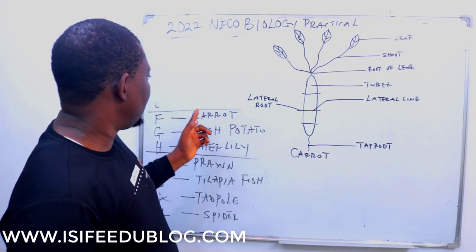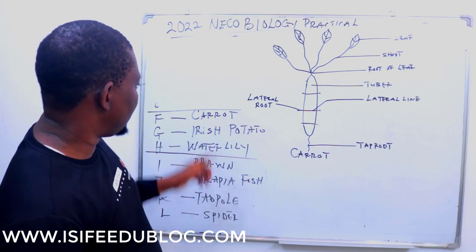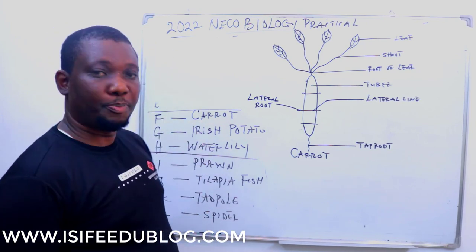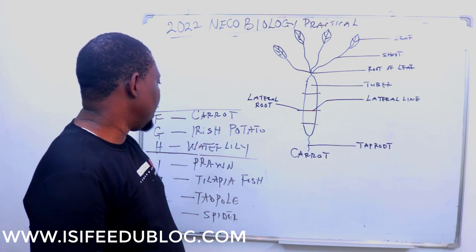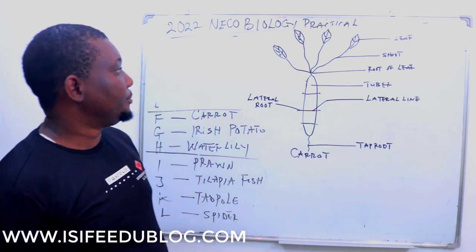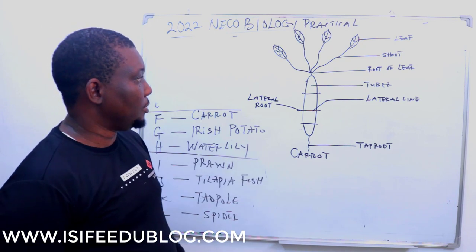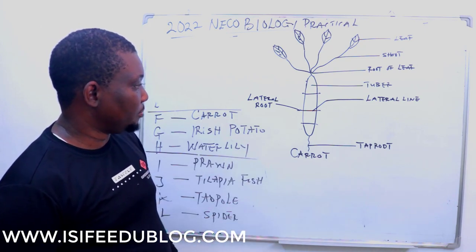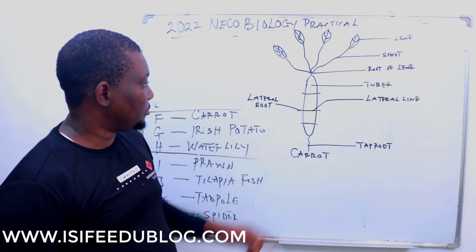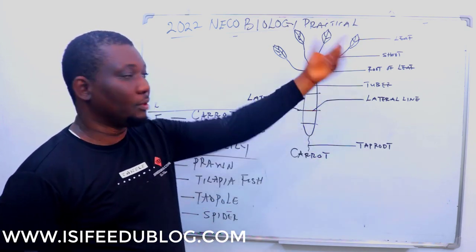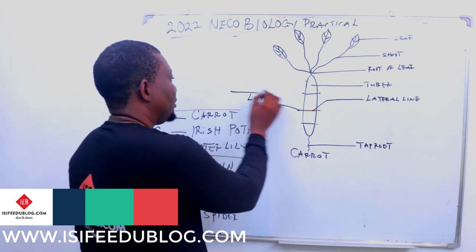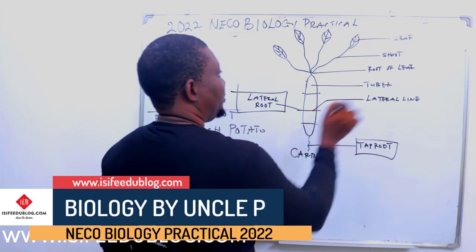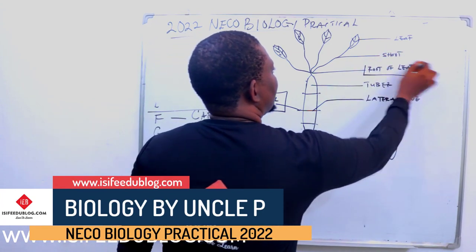Our specimens are F, G, and H. Specimen F is carrot, G is Irish potato, H is a water lily. Looking at these quickly, you find that there are different aspects of roots here — we have the lateral roots, the tap root, and the root of the lily. Lateral roots grow from the side, tap root from the tip, and then roots from the area of the lily.